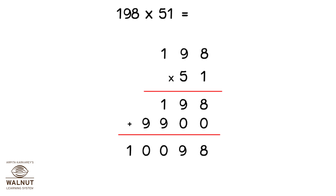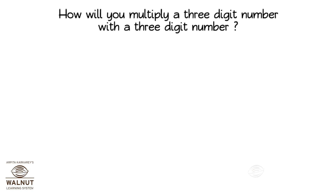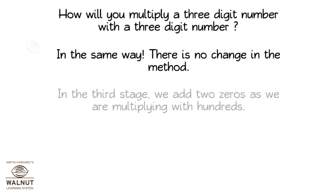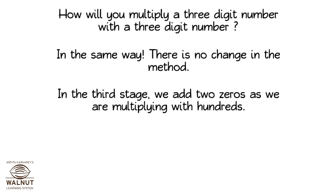Even if the number of digits increases, you know how to multiply. How will you multiply a three-digit number with a three-digit number? In the same way — there is no change in the method. In the third stage, we add two zeros as we are multiplying with hundreds.